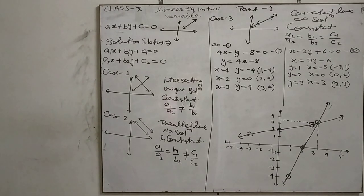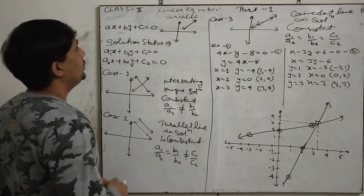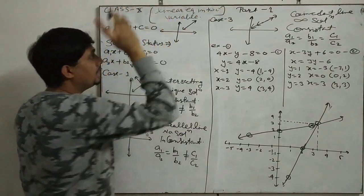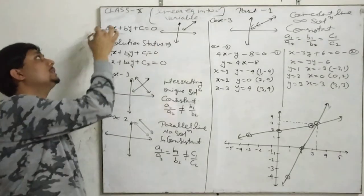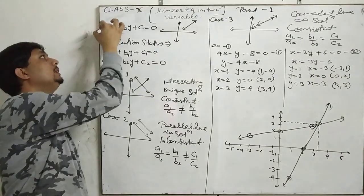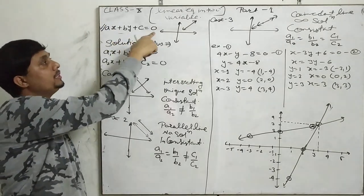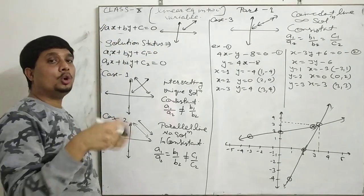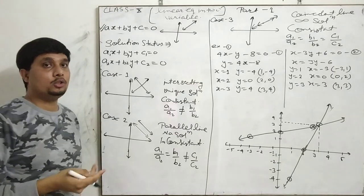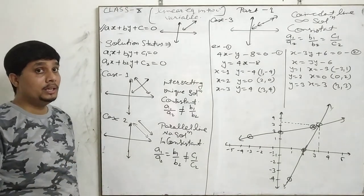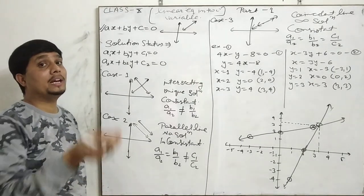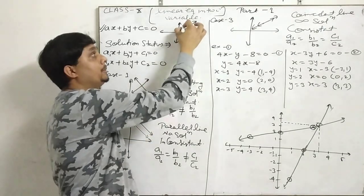Good morning students. Now we are going to start the linear equations in two variables chapter. We are going to study this chapter in 9th class. What is the linear equation? Ax plus By plus C equals 0. In 9th class, we are going to solve solutions in the graph and represent a line.